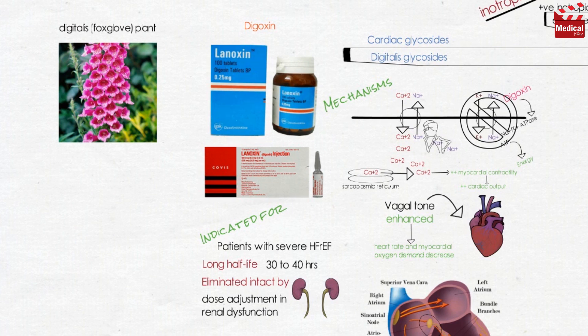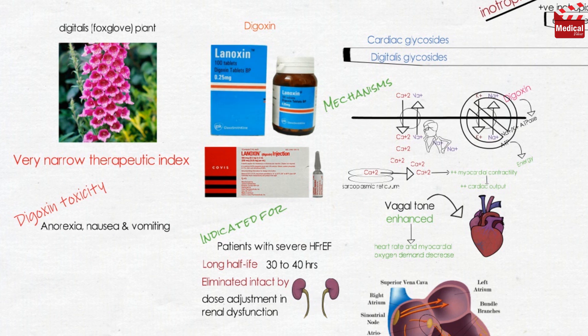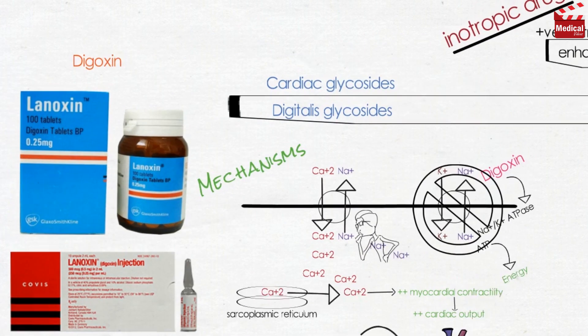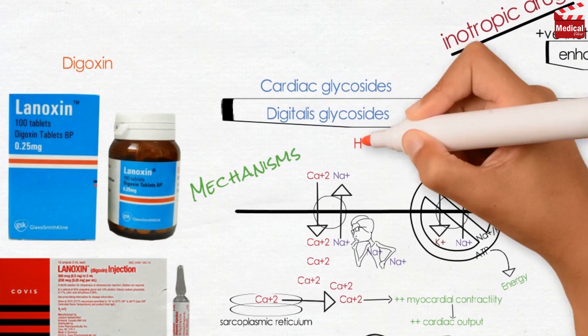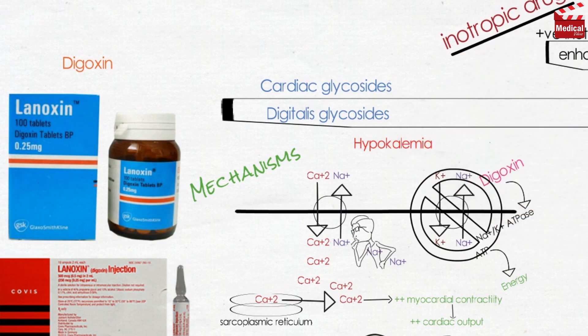It is very important to know that digoxin has a very narrow therapeutic index, and digoxin toxicity is one of the most common adverse drug reactions leading to hospitalization. Anorexia, nausea, and vomiting may be initial indicators of toxicity. Patients may also experience blurred vision, yellowish vision (xanthopsia), and various cardiac arrhythmias. Decreased levels of serum potassium, known as hypokalemia, predispose a patient to digoxin toxicity, because digoxin normally competes with potassium for the same binding site on the sodium-potassium ATPase pump.